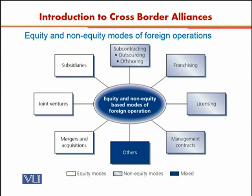In this diagram, you can see the different forms of equity and non-equity modes of foreign operations. The white boxes are equity modes and the light blue boxes are non-equity modes, and the third dark blue box represents other forms of cross-border alliance. In the white boxes, there are mergers and acquisitions, international joint ventures, and subsidiaries. We are going to discuss joint ventures and mergers and acquisitions in the next topics.